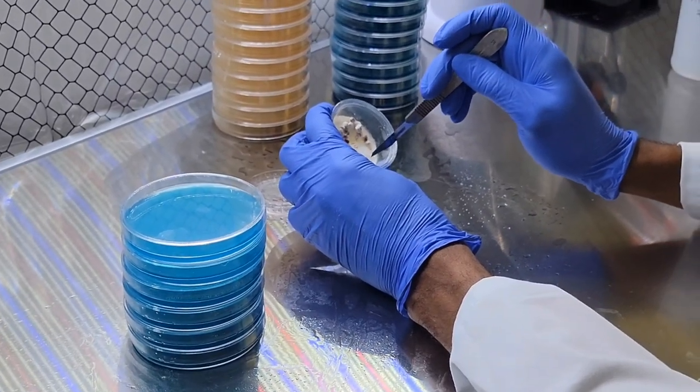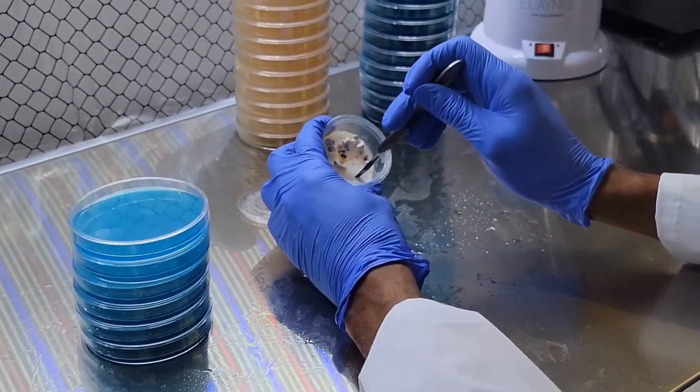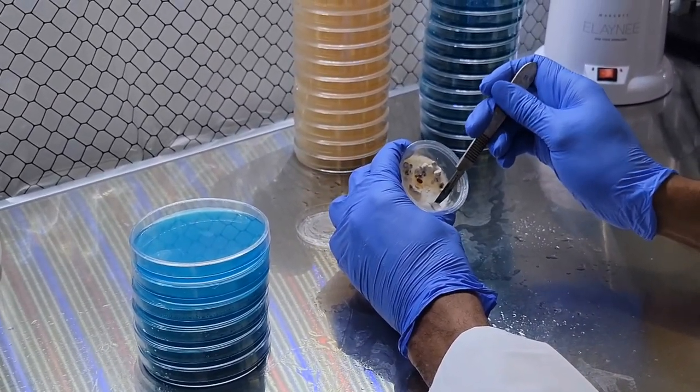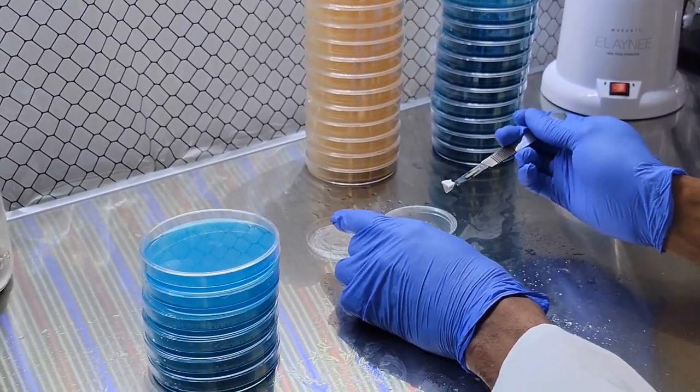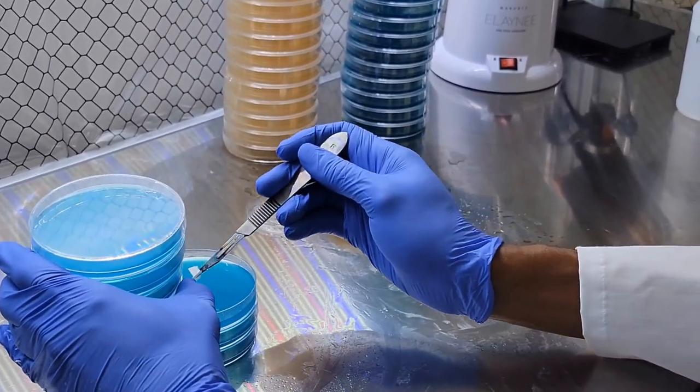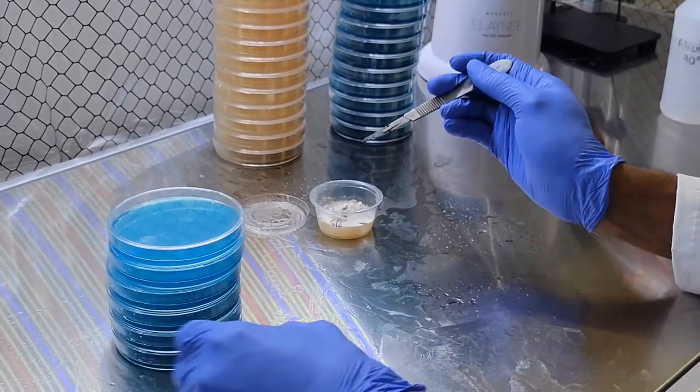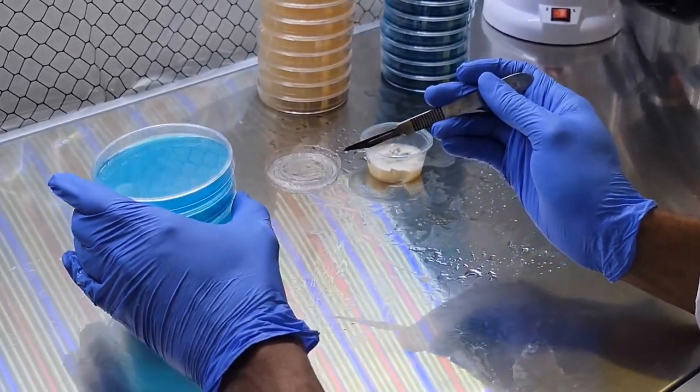And we'll take some mycelium from the furthest edge. This is the freshest mycelium because it's the furthest away from the inoculation point, which is the grain. So you can just kind of gently place it on.